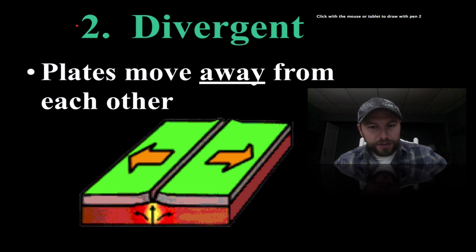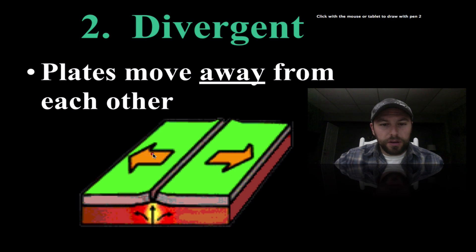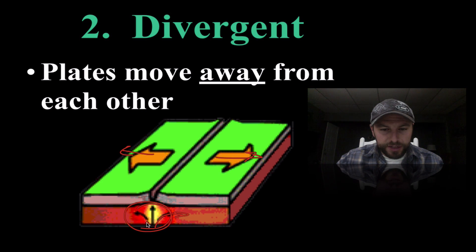Divergent plate boundaries are when these plates move away from each other. Notice we have our asthenosphere underneath and those convection cells driving them, but this is important: notice that this magma is coming up now through that lithosphere.